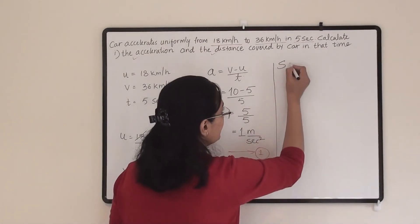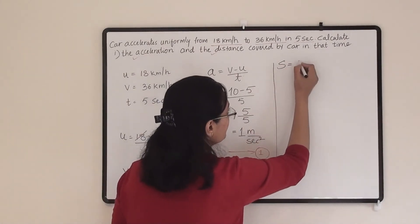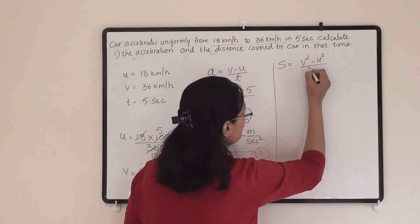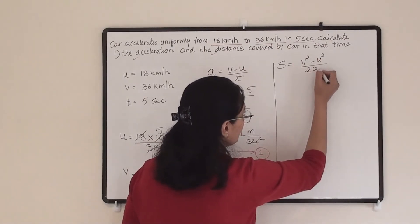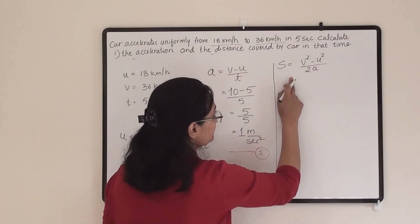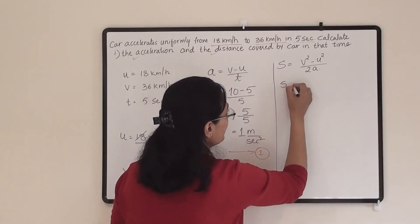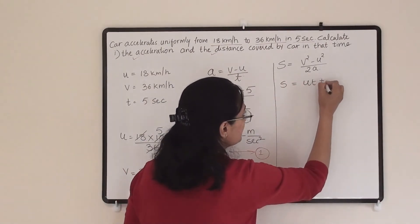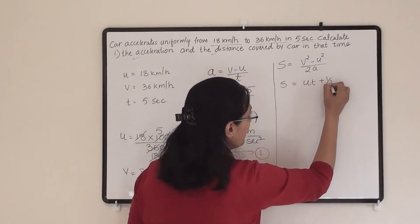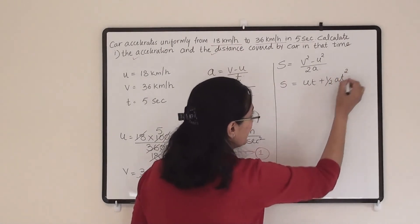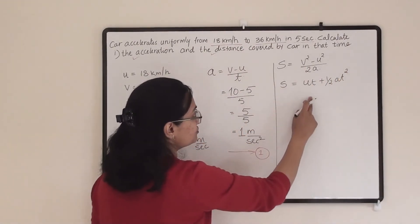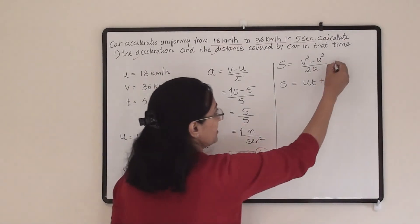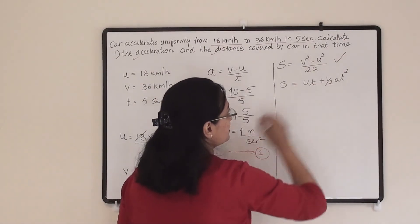We have two formulas for distance. The first is S = (v² − u²) / 2a. The second formula is S = ut + ½at². You can use either one and you will get the same answer. I am going to use the first formula.